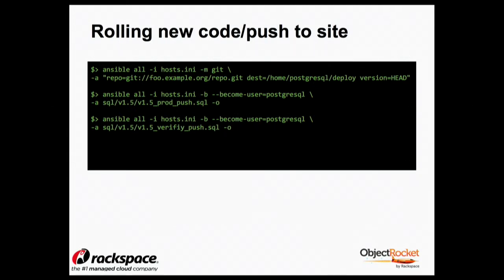Let's say you have a code push with a set of DDL that goes with that application. My advice is to implement that in Ansible and put it in a Git repo. Have your developers check in that code, and then in Ansible say: on all my servers, check out this code and run it. In this case, I'm pulling version head, running it against every server, and saying become postgres and run the v1.5 prod SQL against every host. Then if you're using best practice, you have a SQL file that verifies it: make sure this index is there, these columns are there, the stored procedure compiles — et cetera.